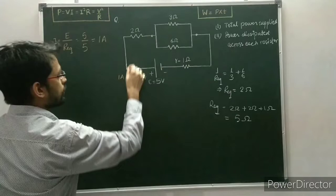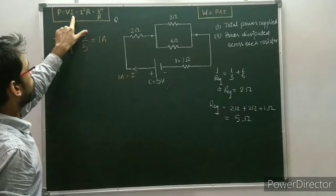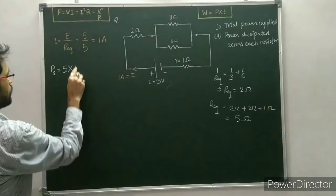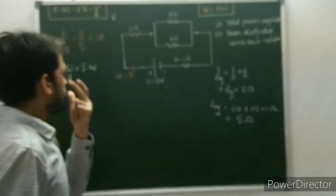Now we can find the total power supplied from the cell. The total power supplied is given by the formula P = V × I, where V is the EMF of the cell, that is 5 volt, multiplied by the current drawn, which is 1 ampere. This equals 5 watt — so 5 watt is the power supplied by the cell.